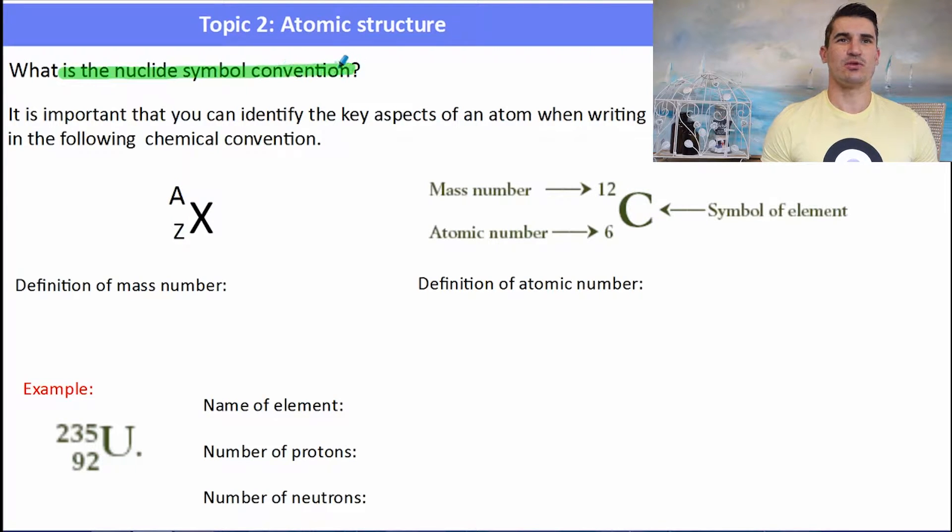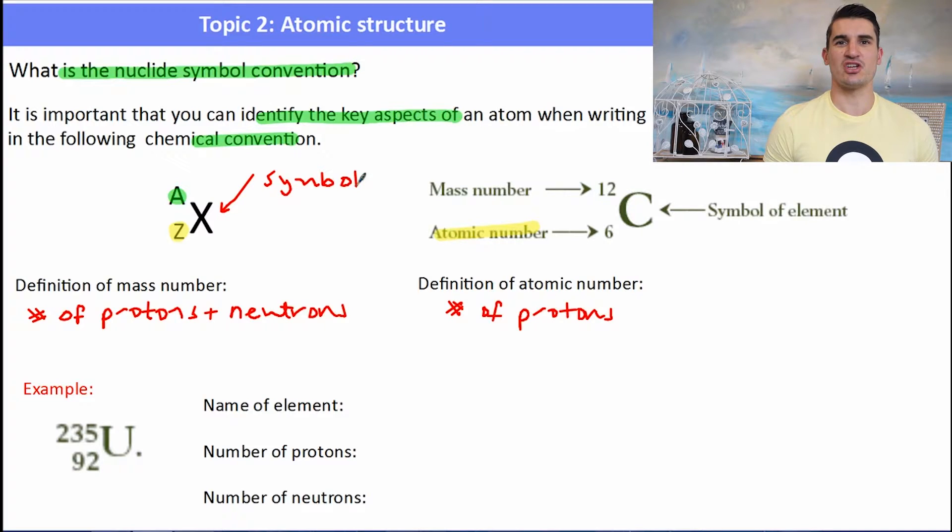Now, what is the nuclide symbol convention? It's a way that we write atoms and ions where we can identify key aspects of the atom or the ion. We have AZX. A is the mass number, defined as the number of protons plus the number of neutrons. Z is the atomic number, found on the periodic table and is different for every element. The definition of atomic number is the number of protons in the atom. The symbol, well that's the two letter abbreviation for the element. Some of them only have one though.